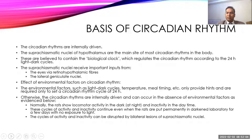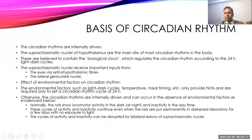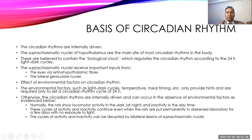Environmental factors also affect circadian rhythm — temperature (like having high heat in the nighttime can affect the sleep cycle), and meal timing (how frequently you have a meal gives a hint to the suprachiasmatic nucleus whether it is daytime or nighttime).